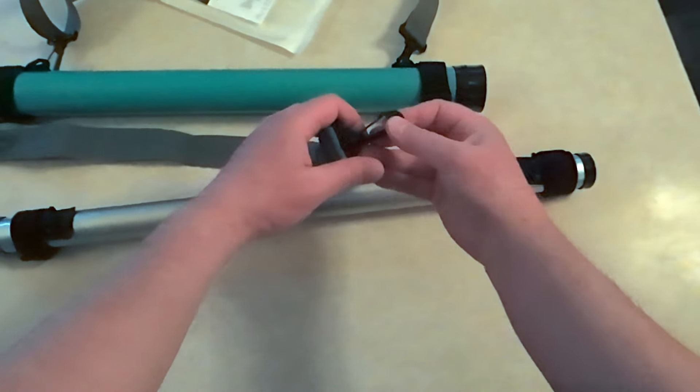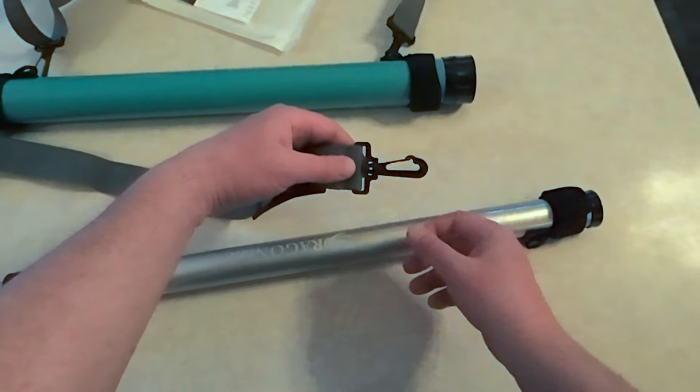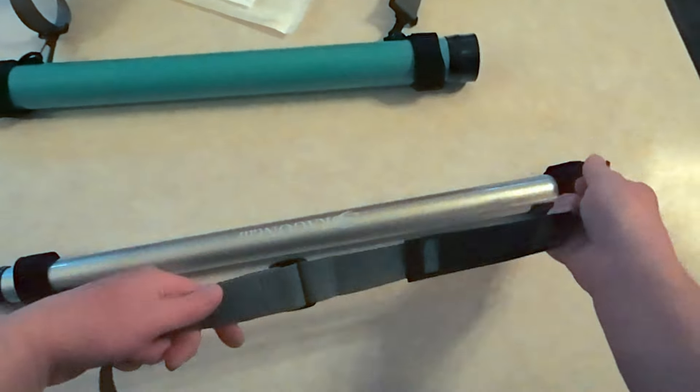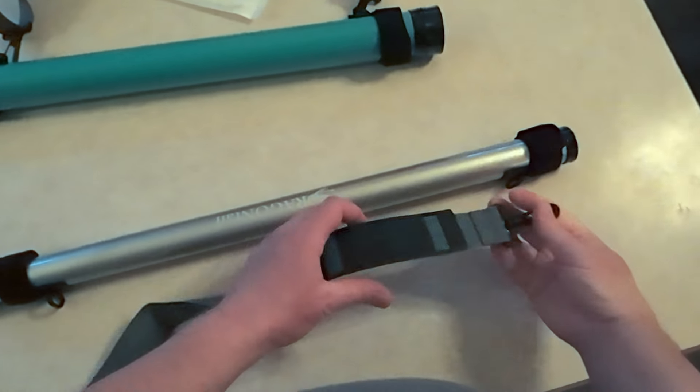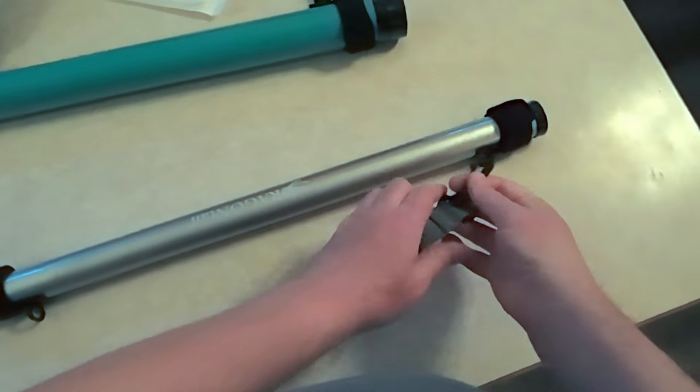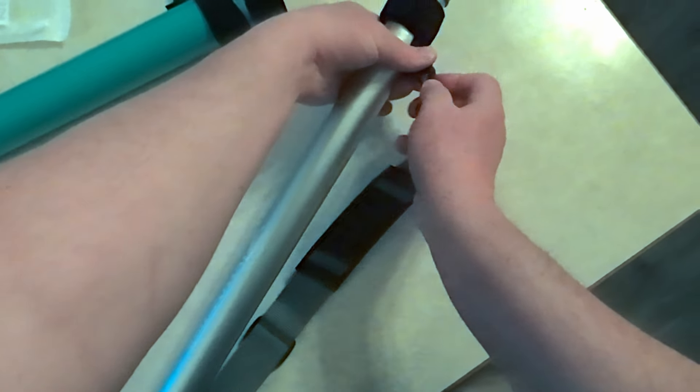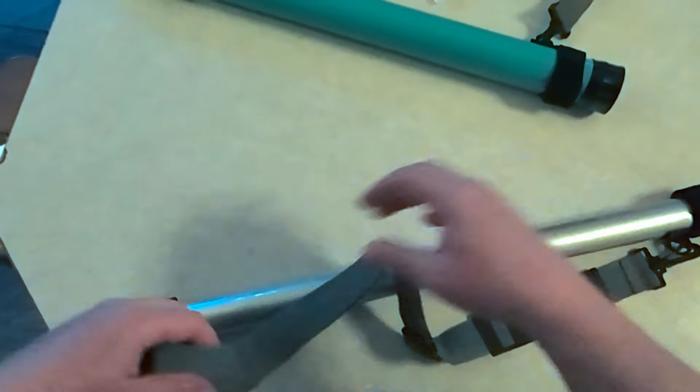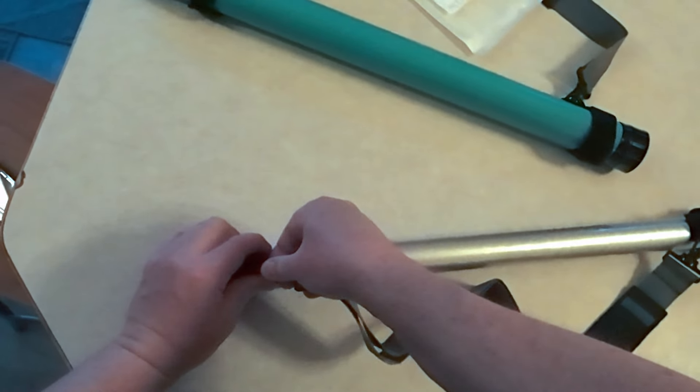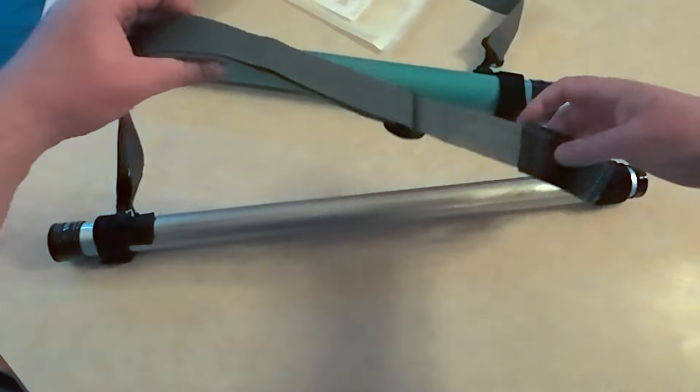So now your sling strap has these clips on it. You want this pad to be on the inside but it will swivel around so if you do it wrong you can swivel it over. So you'll just clip that on that end, take this clip here, clip that on that end.